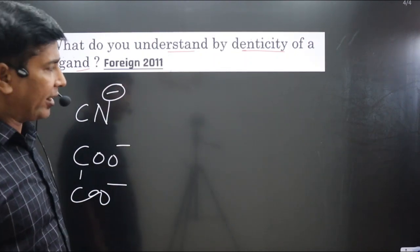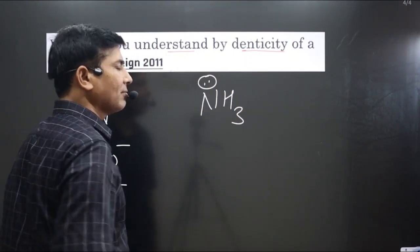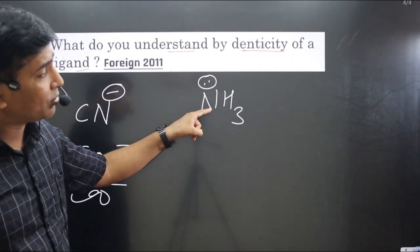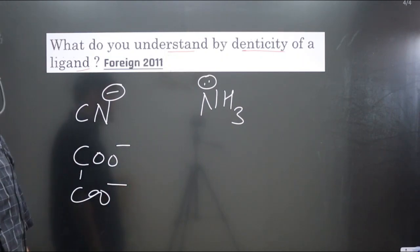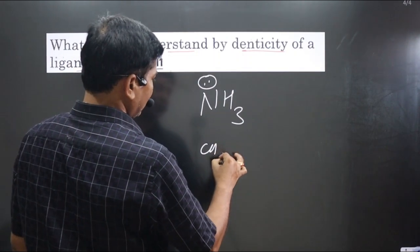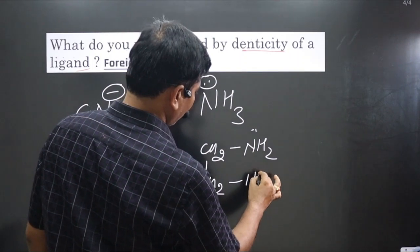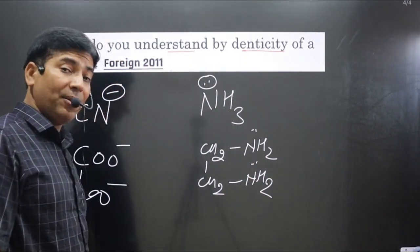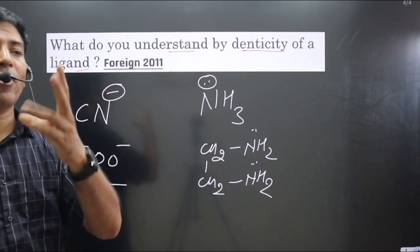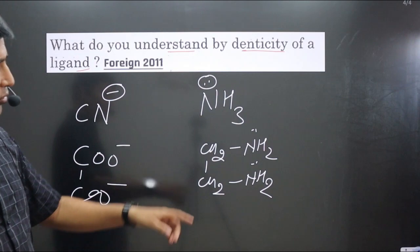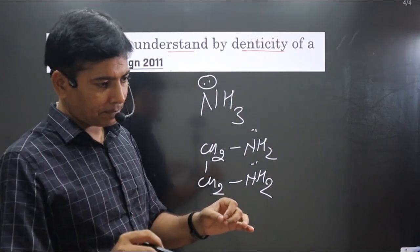For neutral ligands, consider the ammonia molecule. It has only one lone pair, so it is a neutral unidentate (monodentate) ligand because it can form only one coordinate bond. But if we take ethylenediamine (H₂N-CH₂-CH₂-NH₂), it has two lone pairs, meaning it can form two coordinate bonds with the central metal atom. Hence, ethylenediamine is a neutral didentate ligand.